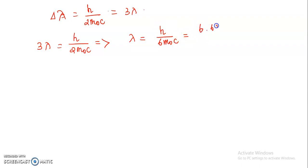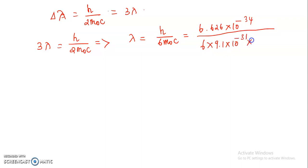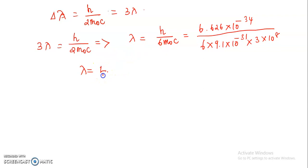Substituting the values: 6.626×10⁻³⁴ divided by 6 times 9.1×10⁻³¹ times 3×10⁸. Calculating all these values, we get lambda equal to 4.02×10⁻³⁰ meters. The first part of the question is solved.